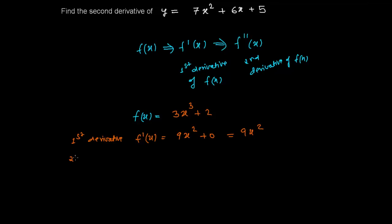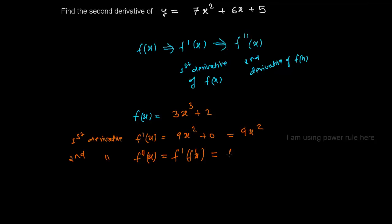Now if someone says, find out the second derivative, it's nothing. You just need to find out the derivative of 9x². So f''(x) is actually the derivative of f'(x). It is 9 times 2, which is 18x, with the power 2 minus 1 = 1. So the second derivative is simply 18x.